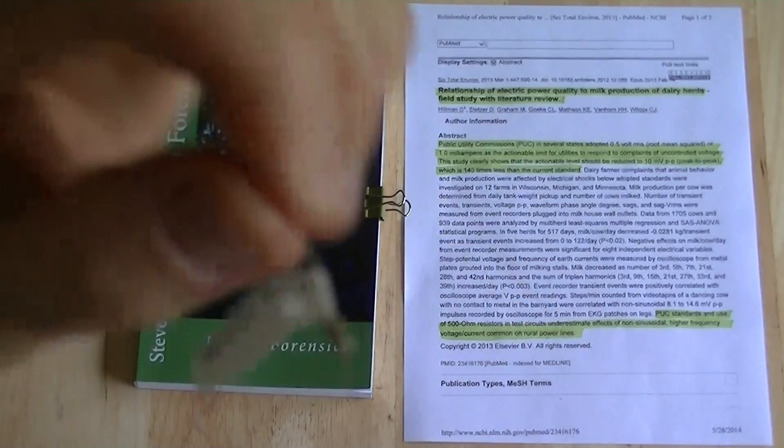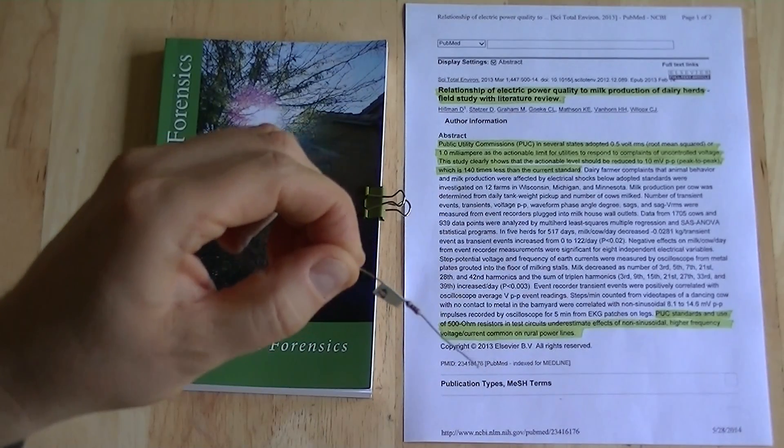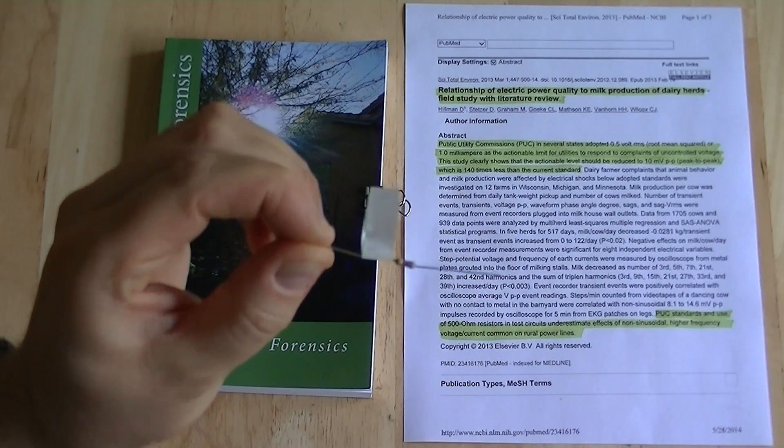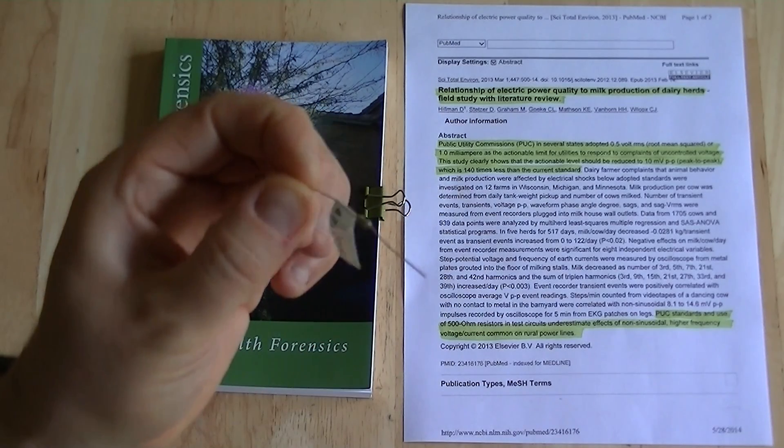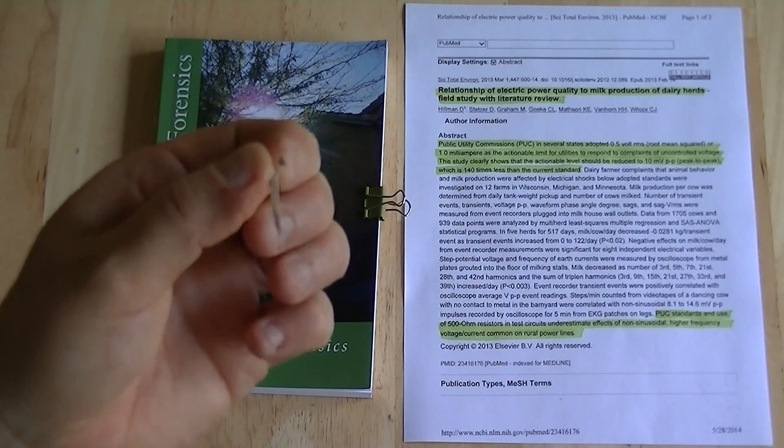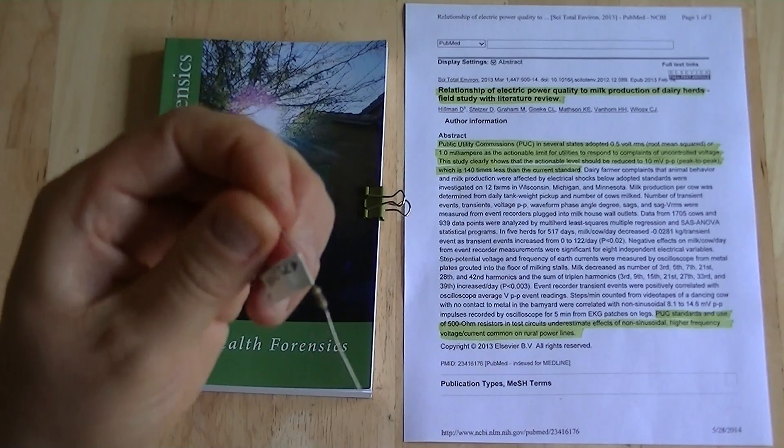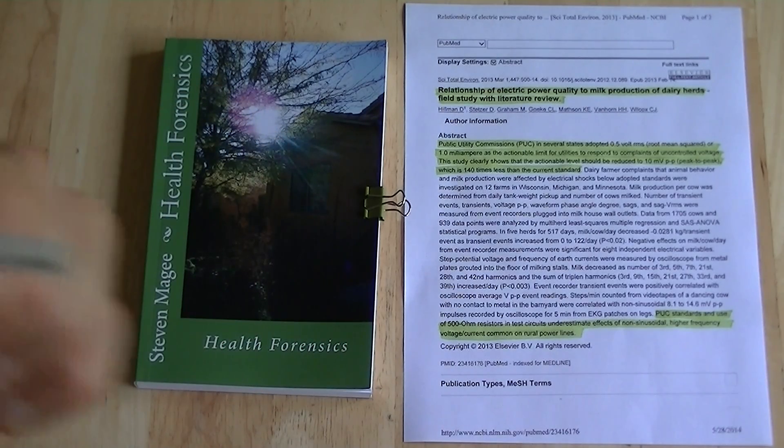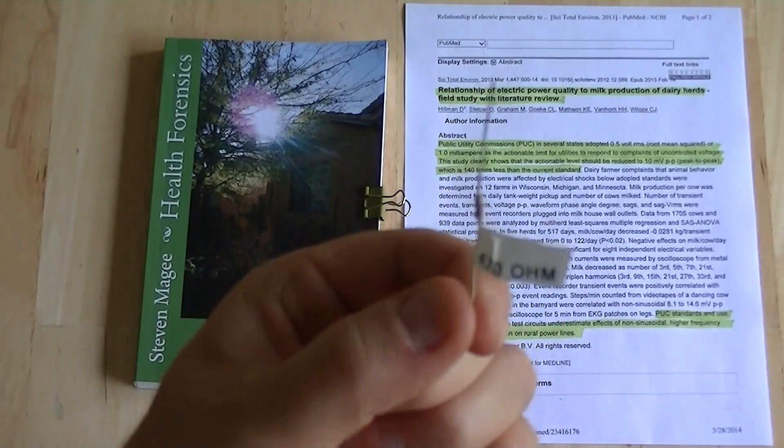You typically put a resistor into the circuit between your positive and ground lead. That is supposed to put a load on the circuit.